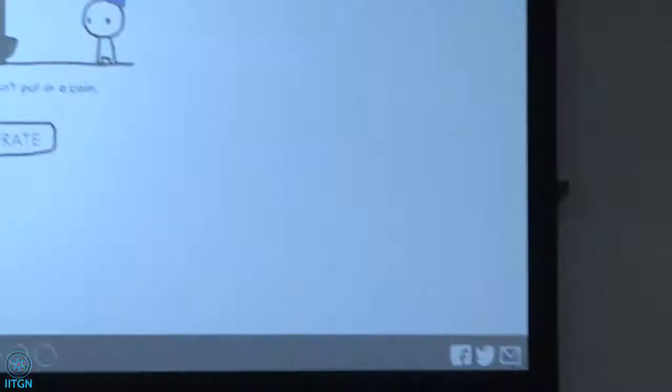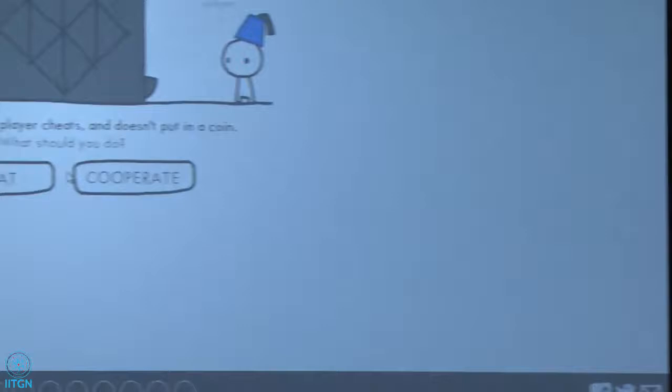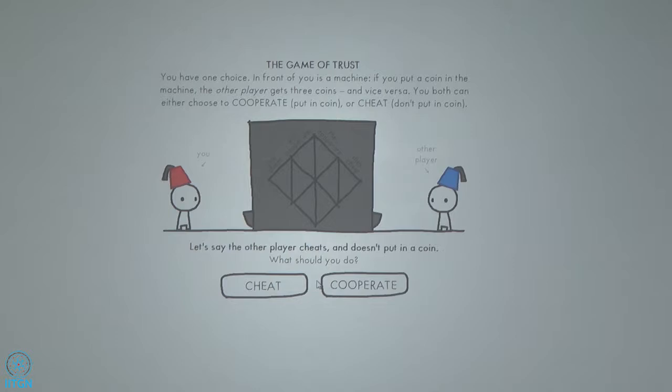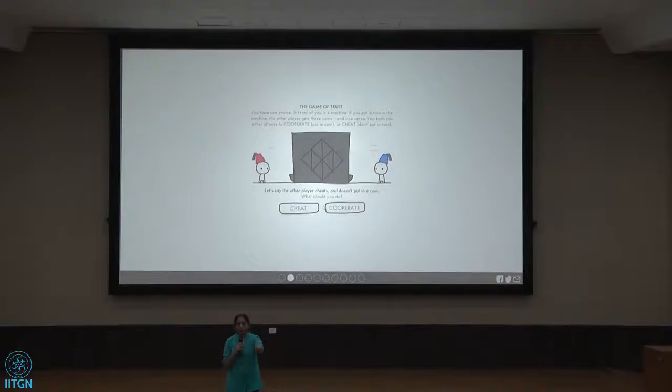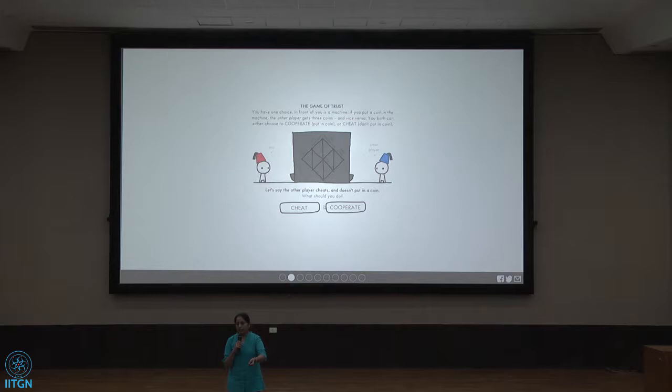So you're going to understand this through a game which is very similar to the golden balls. Here we have two players and we have a machine, and the way this is going to work is that if you put a coin in the machine, the other player gets three coins. You put in a coin, the other player gets three coins, and it's the same for the other player. If he or she puts in a coin, then you get three coins. And you have two moves, therefore. You could either choose to put a coin in the machine or you could choose to not put a coin in the machine. So if you choose to put a coin in the machine, then we are going to call that the cooperate move. And if you choose to hold back, we are going to call that the cheat move. Is the game clear? Is the mechanics clear?